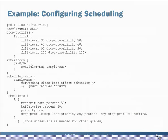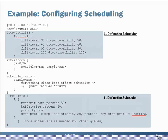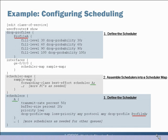Let's put this all together. Configuring scheduling has three broad components. First, define the scheduler: at the bottom you can see scheduler 'a' with transmit rate, buffer size, priority, and a drop profile map that references the drop profile at the top. This is just one scheduler applied to one queue or forwarding class — in practice you'd add more schedulers for each queue. The next step is to collect the schedulers together into a scheduler map, which links them to forwarding classes — for example, forwarding class 'best effort' mapped to scheduler 'a'.